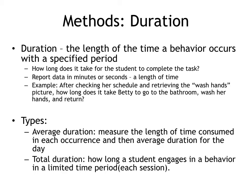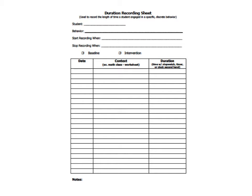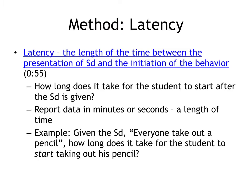Duration is easy — it's the length of time a behavior occurs within a specified time. For example, on-task behavior: if that is your target behavior, you want to see how long the child can sit and be on task — two minutes, four minutes, six minutes. That's the data for how long she was on task. This is a form you can use for duration data recording.